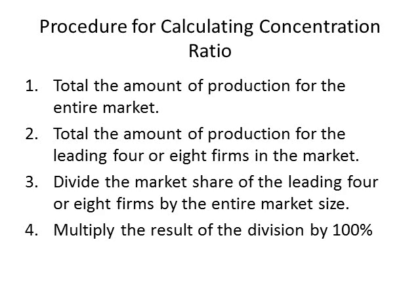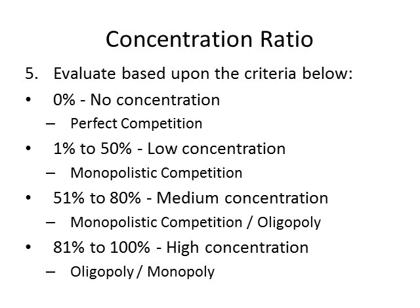The procedure for calculating the concentration ratio is: first, total the amount of production for the entire market; second, total the amount of production for the leading four or eight firms; third, divide the market share of those firms by the total market size; and fourth, multiply the result by one hundred percent.